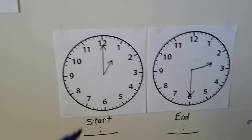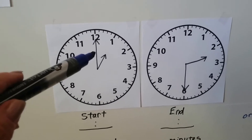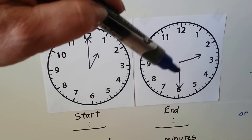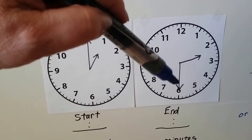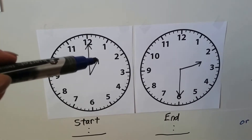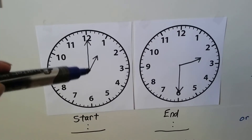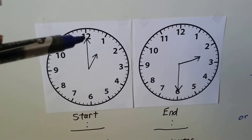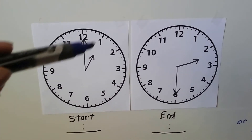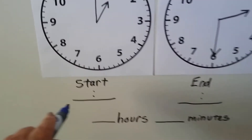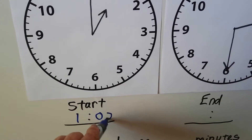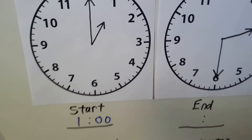Now what happens when the minute hand is not the same on both clocks? This one is pointing at the six. The start clock has the minute hand on the twelve, so it's o'clock, and the hour hand points to the one — so the start time is one o'clock.